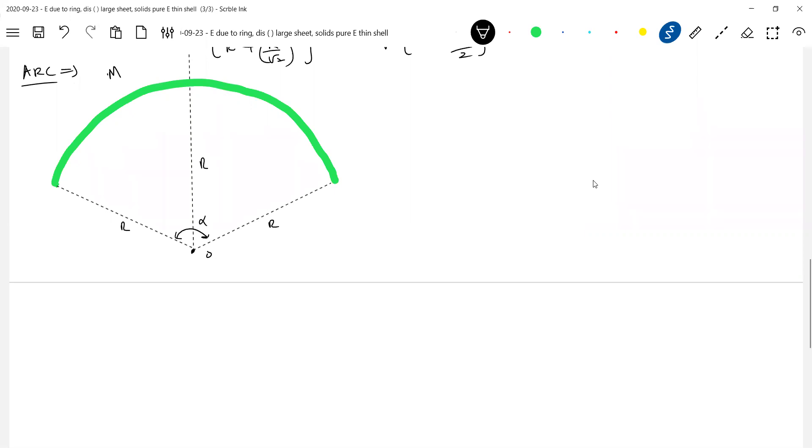Arc means semicircle, ring, quarter circular arc, anything that will come. Let's go for a generalized one. Rather than M, let me define linear mass density lambda. What is a linear? Thin wire. Thin wire is made in the form of a semicircle.